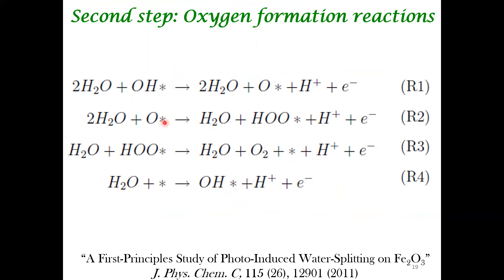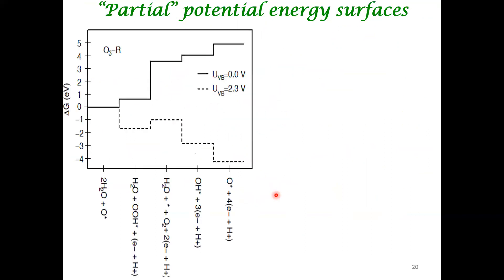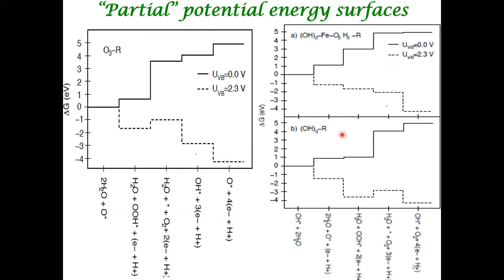Once you identify the dominant surface termination, you can study the oxygen evolution reaction. The pathway involves forming an oxygen adatom, then a hydroxyl species — capturing the energetics very similarly to what we did for ORR and OER. The key difference is that in ORR/OER we scanned a variety of electrode potentials, but here, for the photoelectrochemical system, we fix the potential at U_VB. You then study water dissociation and the oxygen evolution pathway on each termination.